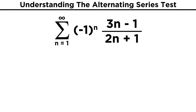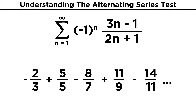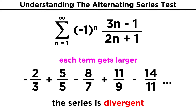What about this one: negative one to the n times the quantity three n minus one over the quantity two n plus one. Here does each term get smaller? Well we have a larger multiple of n on top. As n gets very large, the plus and minus one terms will be negligible, and we just have the numerator getting increasingly larger than the denominator. The terms are therefore not getting smaller, and in this case, that means that the series is divergent.